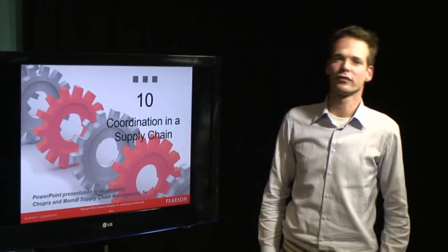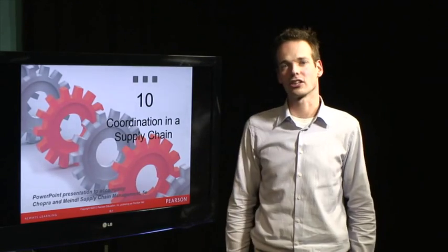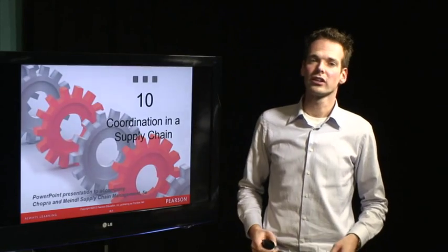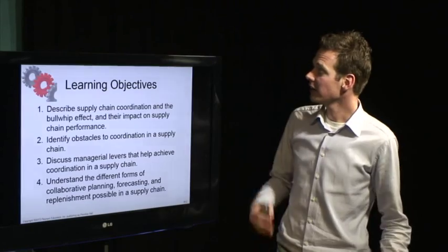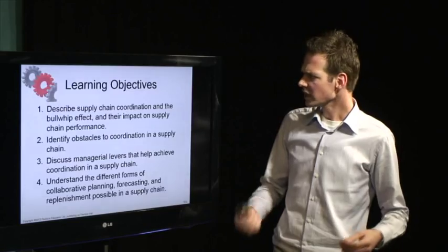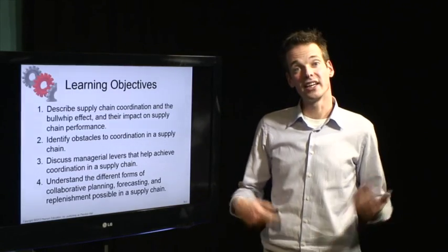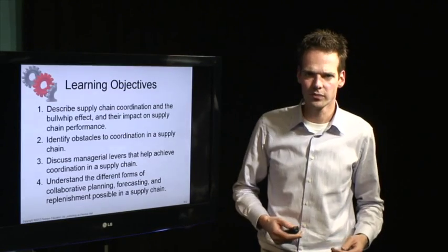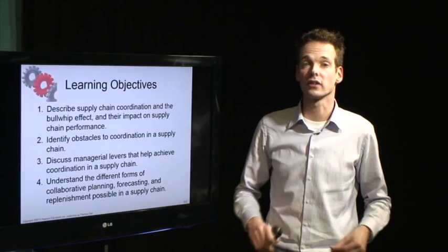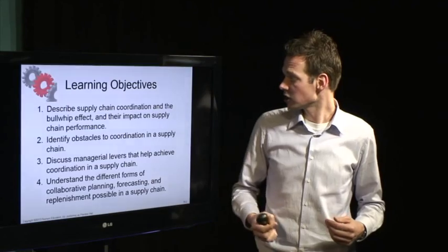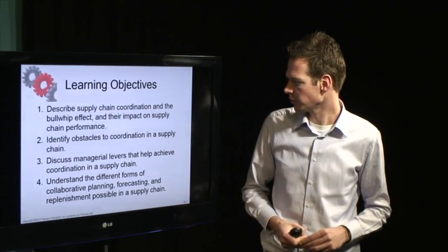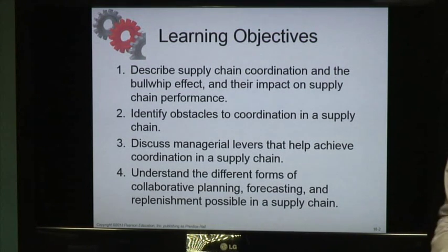Hello and welcome to this video about Chapter 10: Coordination in the Supply Chain. This video series consists of three videos. In the first video we are covering the first learning objective: describe supply chain coordination and the bull-whip effect and their effect on supply chain performance. In the next video we will cover the second learning objective, and in the last video the final two learning objectives. In this video we will cover only the first learning objective.